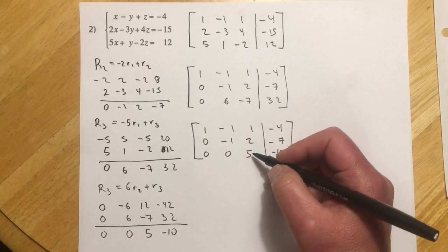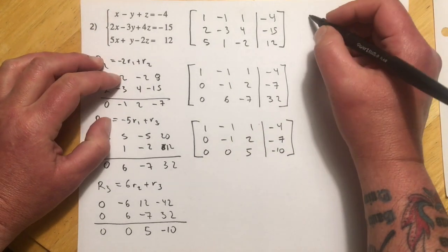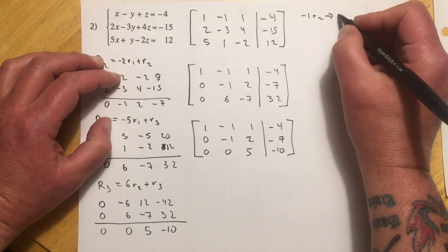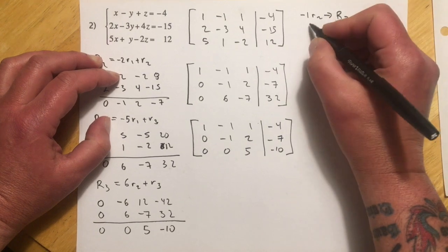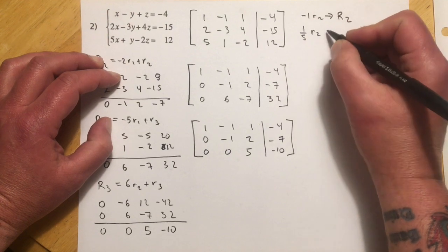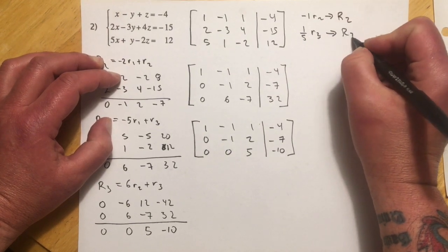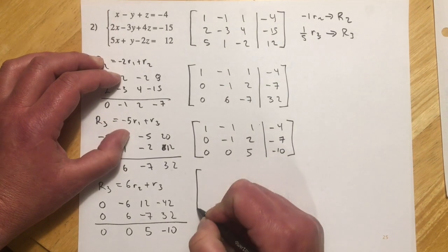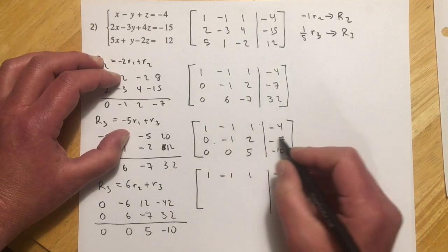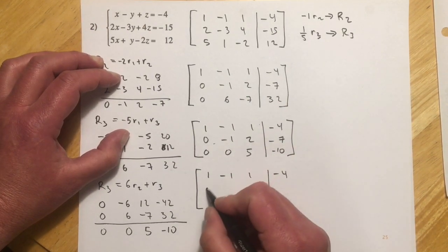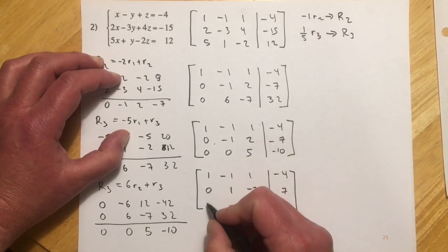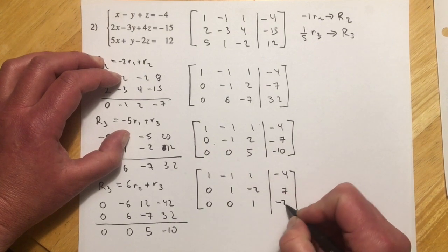And so now, ideally I want a 1 here and a 1 here. So I'll just kind of start that up here. So I'm going to go negative 1 times row 2 to make my new row 2. And I'm going to go 1 fifth of row 3 to make my new row 3. So I'm going down here. I'll just copy down the first one. And then negative 1, we'll just flip all these signs. So I'll have 0, 1, negative 2, and 7. And then 1 fifth of this one would be 0, 0, 1, negative 2.